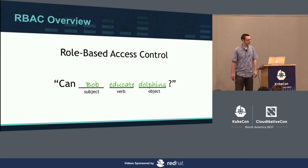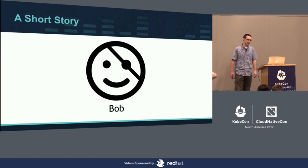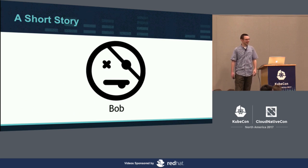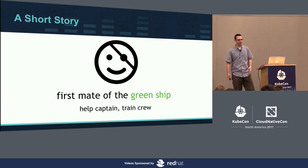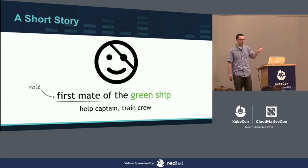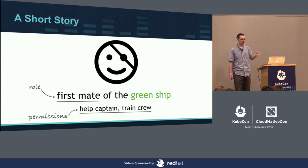Can Bob educate dolphins? This is Bob. Bob's a pirate. Bob works on a really strict ship, and if you don't ask for permission, you walk the plank. So Bob is the first mate of the green ship, and his responsibilities — his permissions — are to help the captain and train the crew. If we're thinking in terms of roles, his role is first mate, and a role is just a named set of permissions. The first mate role includes the permissions of helping the captain and training the crew.